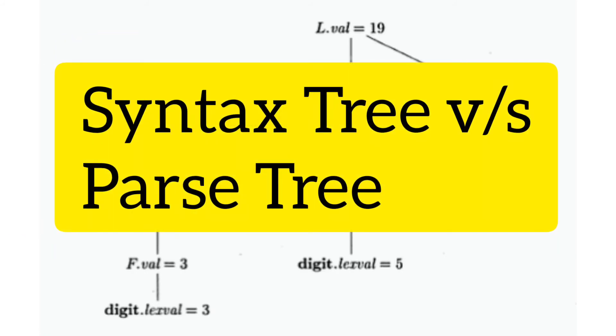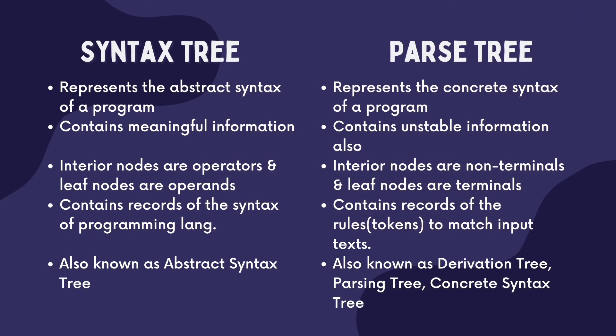The major difference between syntax tree and parse tree is: the syntax tree represents the abstract syntax of the program, whereas the parse tree represents the concrete syntax of the program. In the syntax tree, there is meaningful information, while in the parse tree, there is detailed structural information. The syntax tree contains the records of the syntax of the programming language, while the parse tree contains the records of the rules — i.e., tokens — used to match the input.